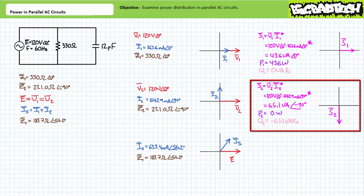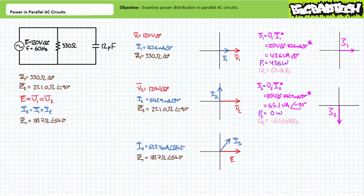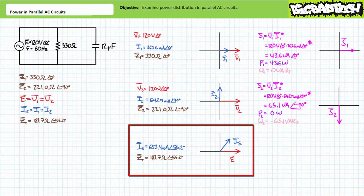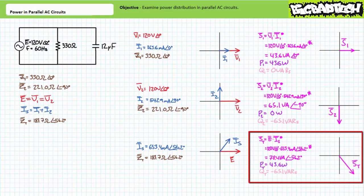Note the complex conjugate operation accounts for the negative reactive power sign. Although I personally loathe this terminology, you'll sometimes hear people referring to a capacitor as supplying reactive power. Let's now examine the larger circuit. Given our larger circuit is composed of only two elements — one consuming 43.6 watts of real power and the other supplying 65.1 vars of reactive power — one might anticipate the total power to be the summation of 43.6 watts and negative 65.1 vars. Total apparent power is the complex conjugate of source voltage times source current, yielding 78.4 volt amperes at an angle of 56.2 degrees, with real power of 43.6 watts and reactive power of negative 65.1 vars.